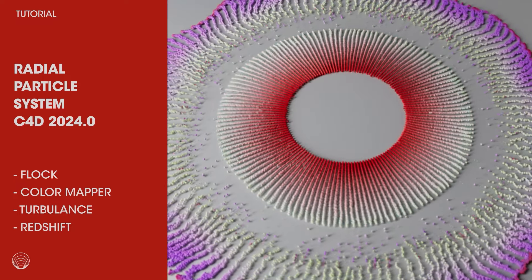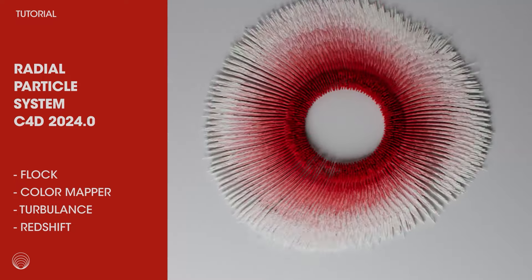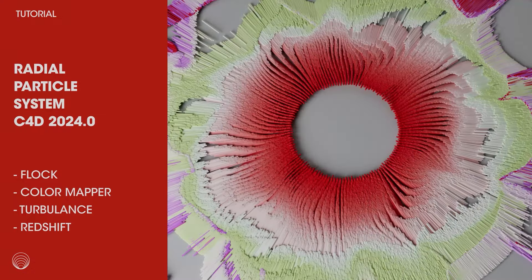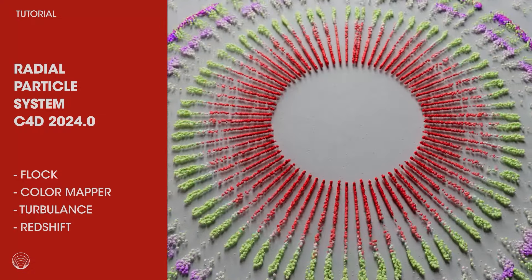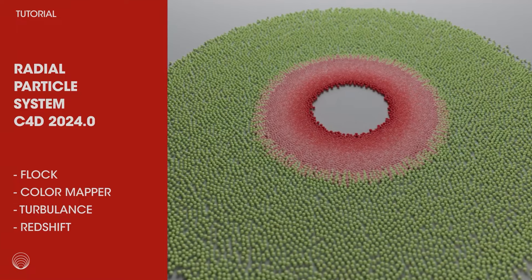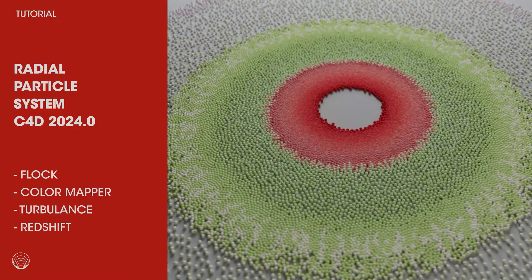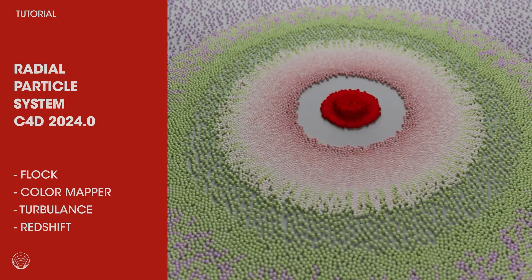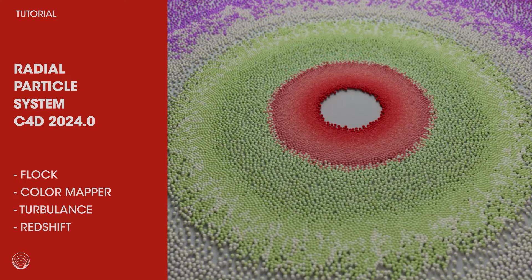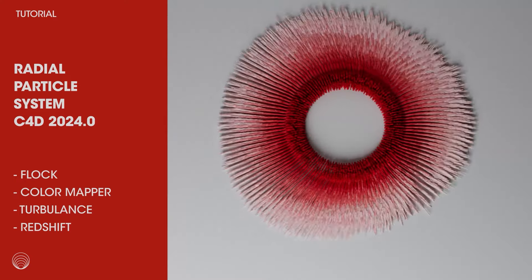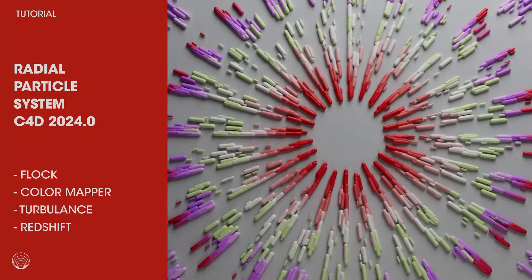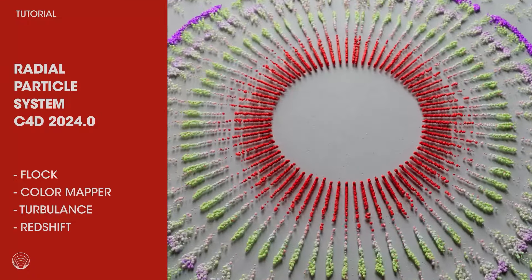Hey everyone! Welcome to another tutorial of Friends of Motion. Today I'm going to dive into the Cinema 4D 2024 particle system. I'm going to show you how to make a colorful radial particle animation using flock, color mapper, and turbulence modifiers. At the end we'll render it in Redshift and I'll show you how to customize the particles for a nice final render.